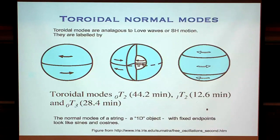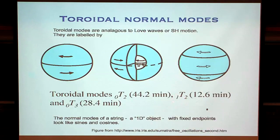Finally, we have 1T2 — we've got a 1 at the beginning of the label. That tells us not all depths in the planet are moving in the same direction. The 1, a radial order of 1, tells us the inside of the Earth is moving in the opposite direction to the outside. So the inner half twists one way while the outer half twists in the opposite direction.